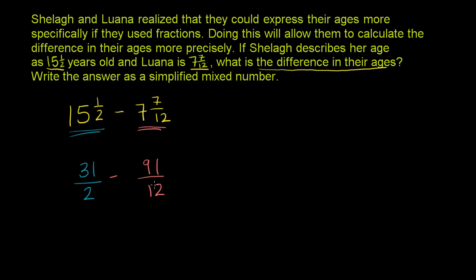Now we've written both of them as improper fractions, but we still have different denominators. So we have to have a common denominator. What is the least common multiple of 2 and 12? Or what's the smallest number that's divisible by both of them? Well, 12 is divisible by 12, and 12 is also divisible by 2. So 12 is the least common multiple. We want both of them to be over 12. And this fraction already is over 12, so we don't have to change it. 91 over 12.